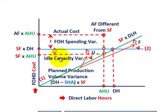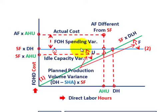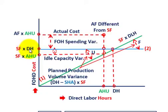Now we'll look at two additional variances using the same graph: the idle capacity variance and the planned production volume variance. The idle capacity variance looks at where actual hours used intersects our variable amount — standard fixed rate — versus the fixed amount, which is standard fixed rate times denominator hours. That space between those two points is our idle capacity variance: standard fixed rate times actual hours used, versus standard fixed rate times denominator hours. That's our flexible budgeted amount.